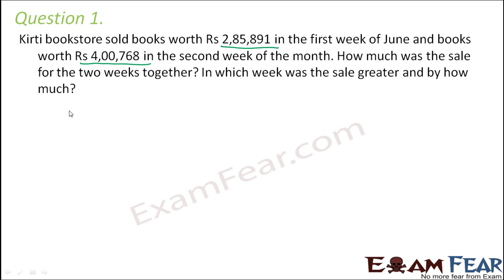So for two weeks together, what would be the total sale? Of course, the total sale would be the sale in first week plus the sale in second week. That is going to be the total sale. So the first week sale is 2,85,891. And the second week sale is 4,00,768. So we will add up the sales for the first week and the second week. So this is how we will add up.